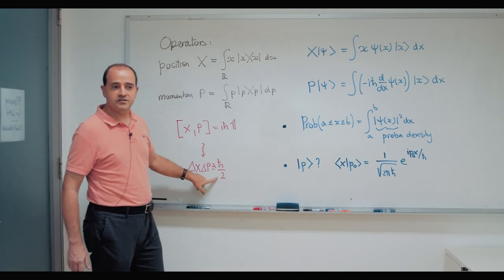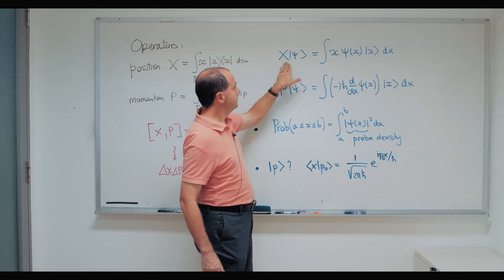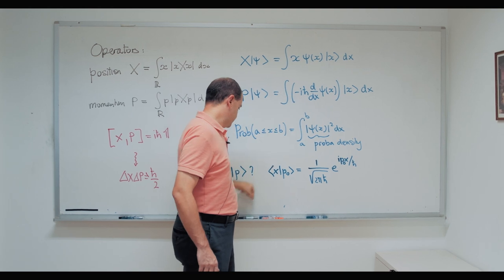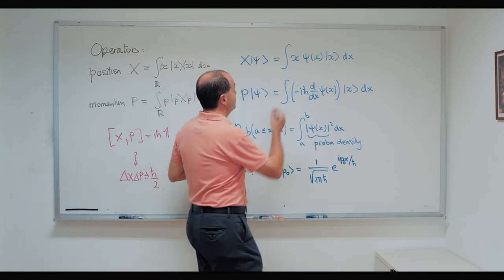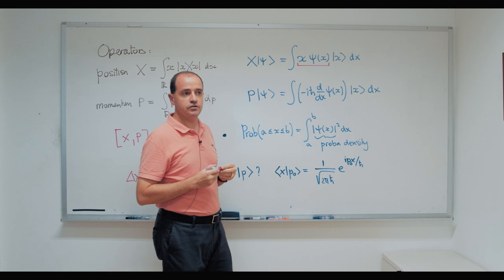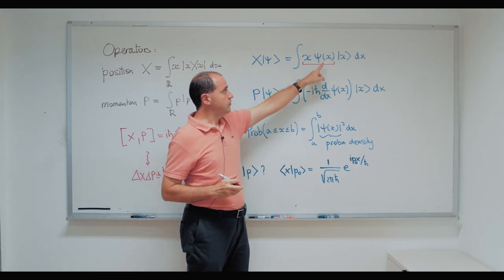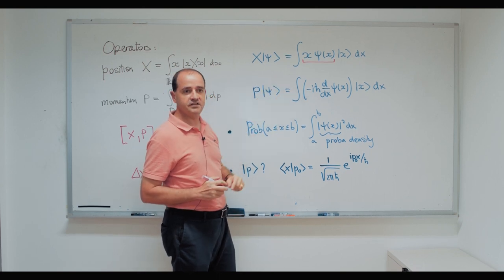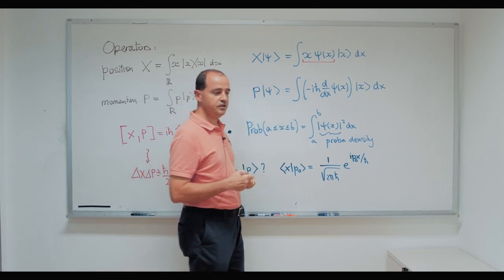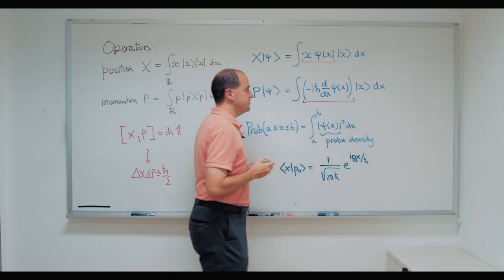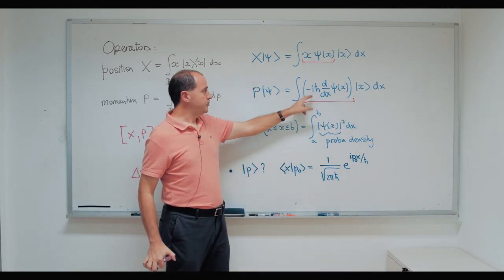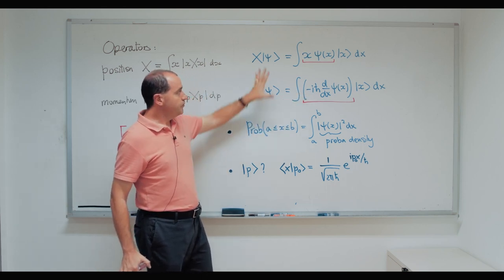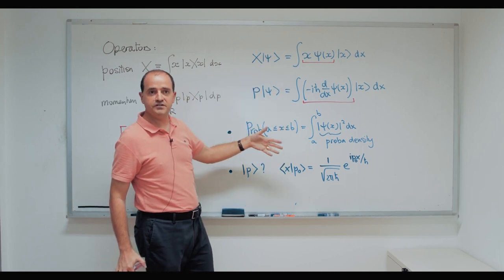Let's see how these operators act on states. The position operator acts on a state by just multiplying the wave function by x — this is the action of the position operator on ψ(x). The action of the momentum operator on ψ(x) is very different: it's not a multiplication, it's a derivative. From these two, various consequences will follow that we'll see in the course.